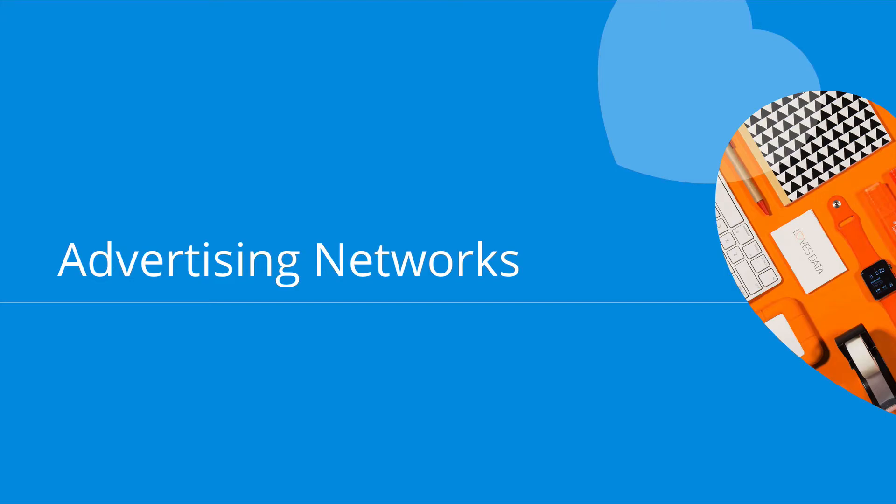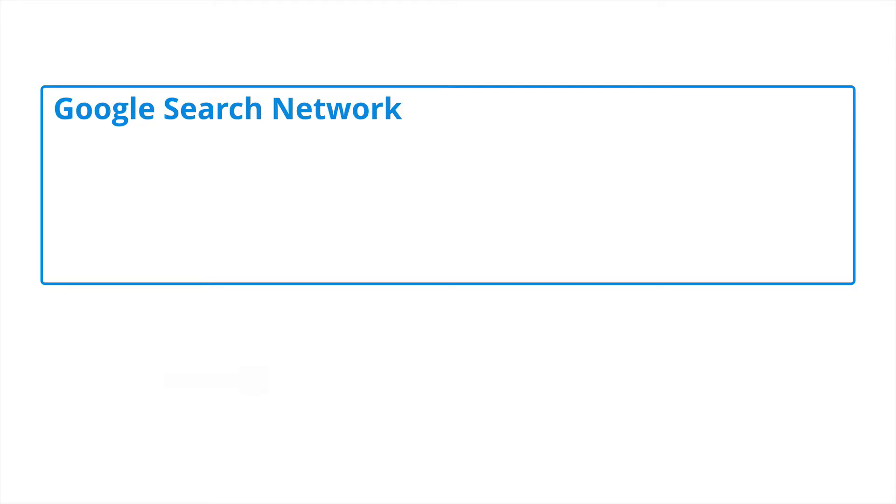So let's take a look at these networks. First, we have the Google Search Network. This is where I recommend starting in most cases because it's a familiar experience. It's easy to understand where and when people see your ads. You know that people are actively looking for information as they're searching, and we present an ad as they're searching for our products or services.